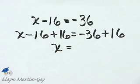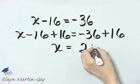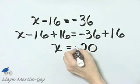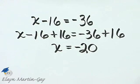Then what is negative 36 plus 16? We subtract, and we take the sign of the number with the larger absolute value, which is negative 36, so negative 36 plus 16 is negative 20.